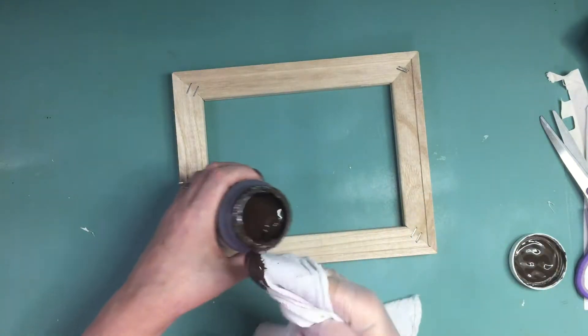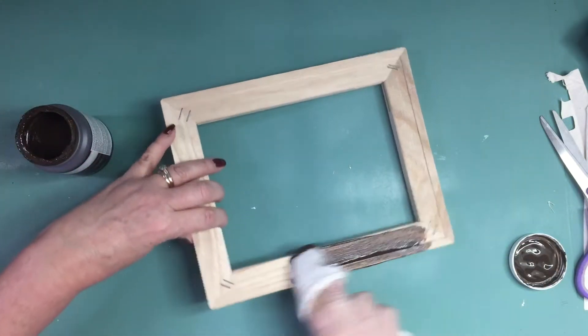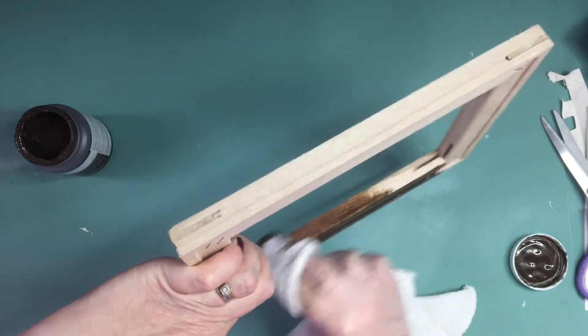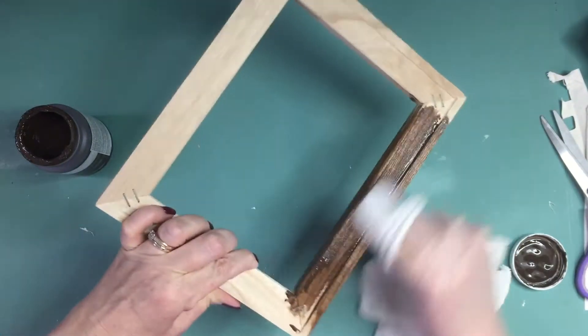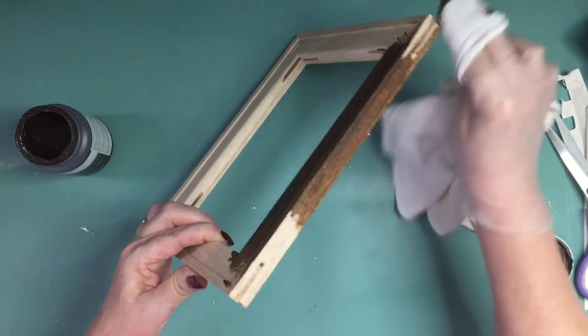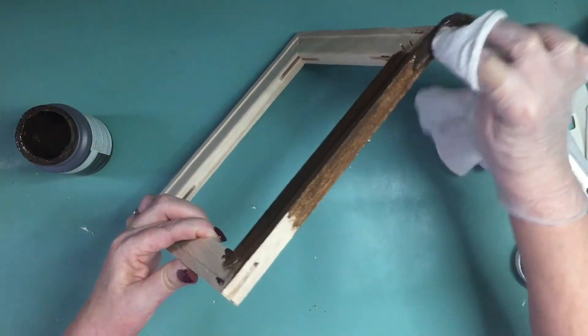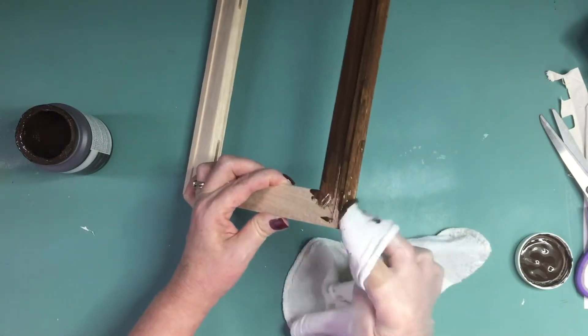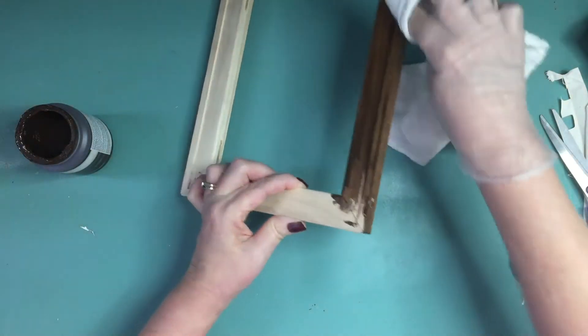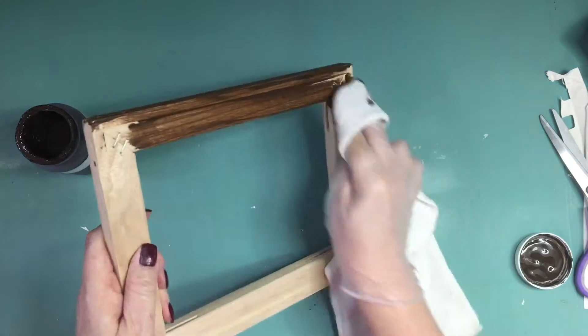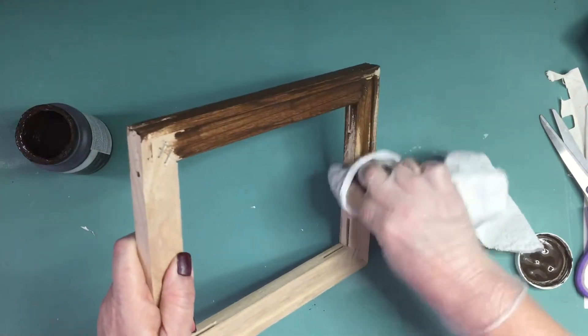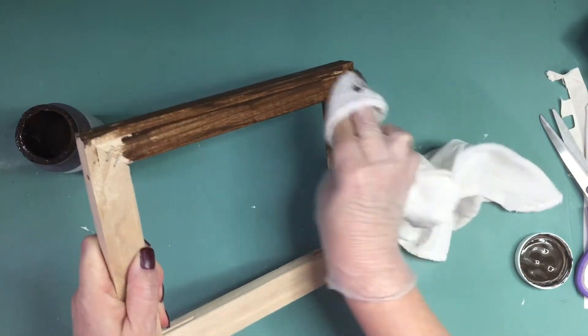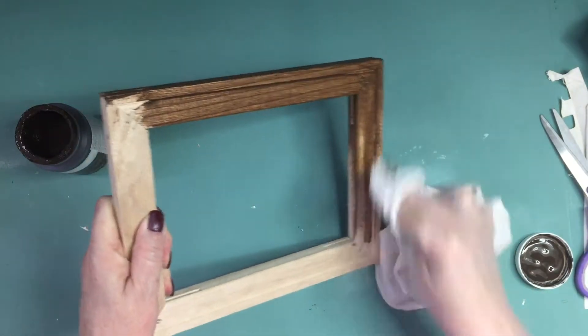Then the next step is to either paint or stain your frame. You can do whatever you like. You could paint it a color, paint it white or cream. What I'm doing here is I'm actually using antique wax to make it look like it's stained and this is just something you can buy at a crafting store and you can either use a wood tint or you can use a dark antique wax like I'm doing here.